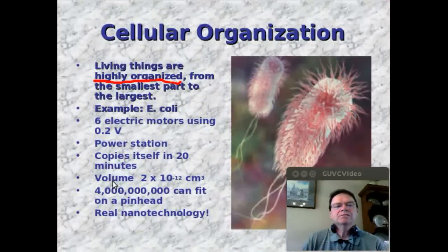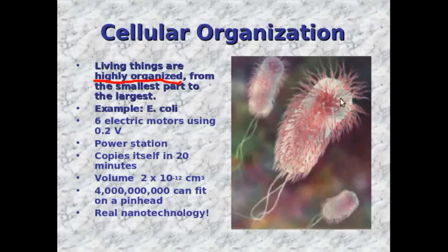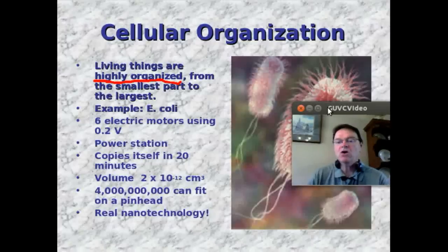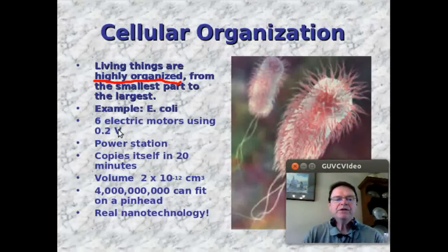First off, living things are organized — highly organized, in fact. Take a look at this picture. Here you have a picture of Escherichia coli, a bacteria. It has six electric motors. It has its own power station. It can make a copy of itself in 20 minutes. It has a volume of 2 times 10 to the negative 12 cubic centimeters, extremely small. Four billion can fit on the head of a pin. That's what I call real nanotechnology. So living things are organized.